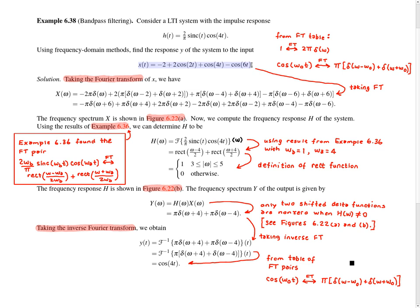I'm going to start with the equation for x. Taking the Fourier transform of x, we can observe that on the right-hand side all of the terms are either constant terms, like this first term here, or terms that involve a cosine function, like this term here. So to take the Fourier transform of x, we simply need to use two Fourier transform pairs from our table: the Fourier transform of 1 and the Fourier transform of cos(ω₀t). Applying these pairs to the right-hand side gives us the next line, and by reordering terms we obtain this particular expression.